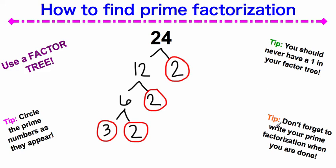Now, both 3 and 2 are prime numbers — there's nothing else that can multiply to equal those numbers except for 1 and themselves — so I will circle both of them. As we circle the prime numbers, we have to make sure there are no 1s in our factor tree. We don't need to do 2 times 1, 2 times 1, etc., because it just makes for more work. So you'll notice we've got a 3 and then three 2s. We're going to write our prime factorization now, going from the smallest number to the largest: 2 times 2 times 2, and then times 3.